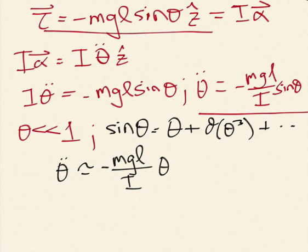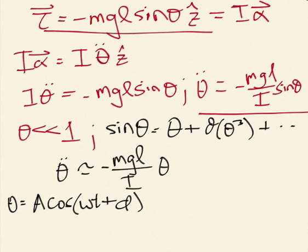We get that theta is equal to, the general solution is cosine omega T plus some phase factor phi as before. That's theta. And we know that the frequency is given as the square root of the coefficient multiplying theta. So that's going to be square root of M-G-L over the moment of inertia. So for small angle of oscillation, if we don't have too big of an angle.